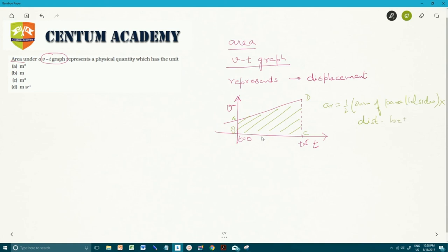But clearly we know that area under Vt graph represents displacement, and what's the unit of displacement? Displacement is measured in meters. So hence the unit will be meters. Hence in this case option B is correct.